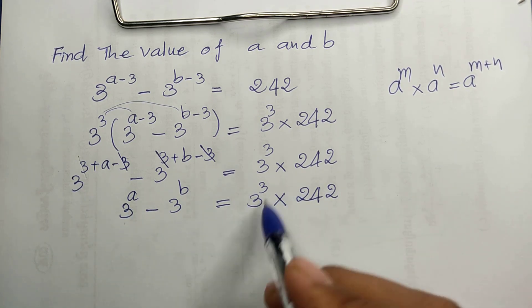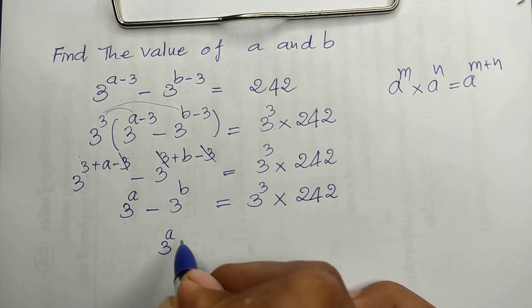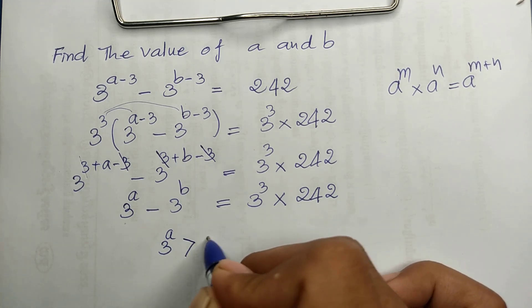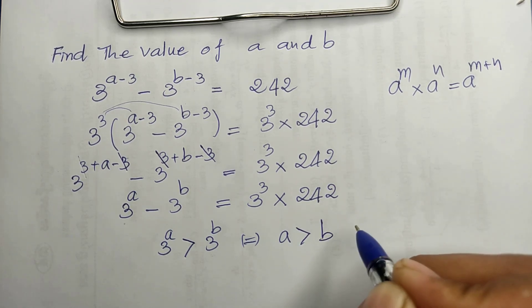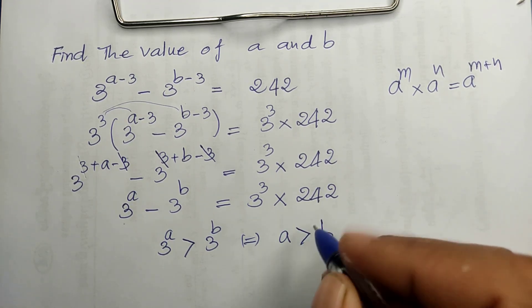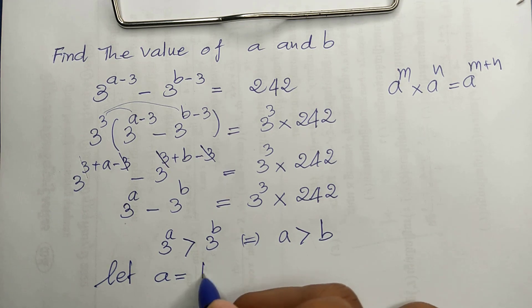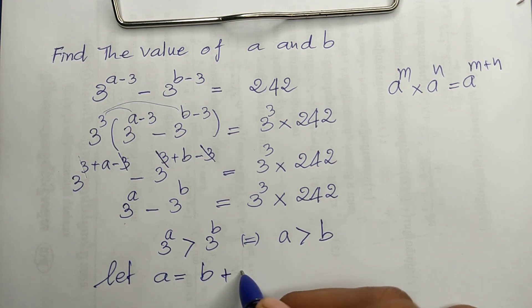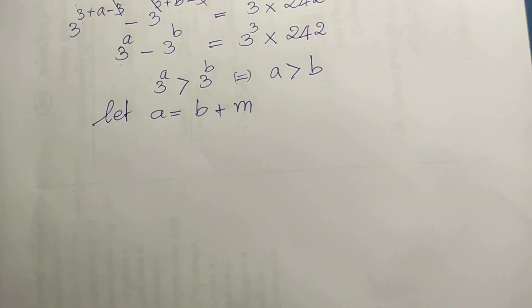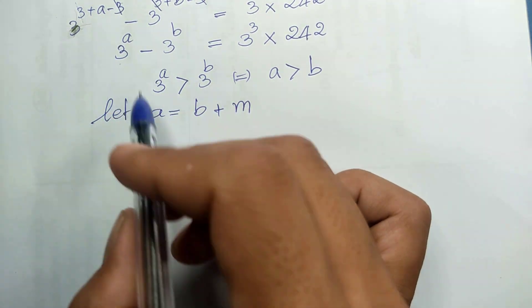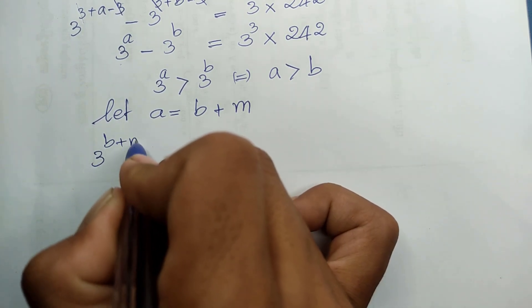Since 3^a minus 3^b is a positive number, we get 3^a is bigger than 3^b, so a is bigger than b. Therefore we can let a equal b plus m.